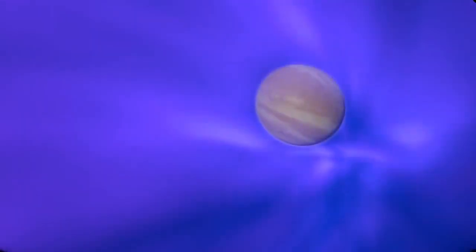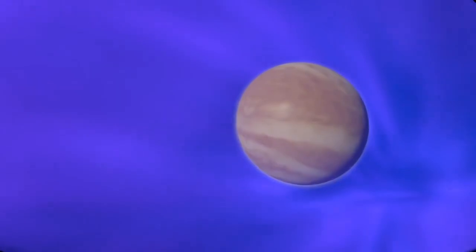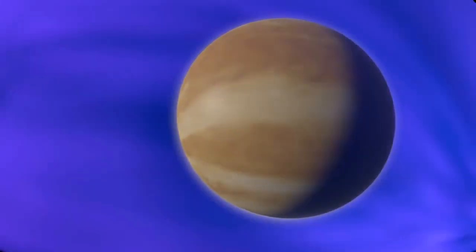Venus is the size of Earth, but rotates so slowly that no dynamo could form in its core. The solar wind bombards its atmosphere directly.